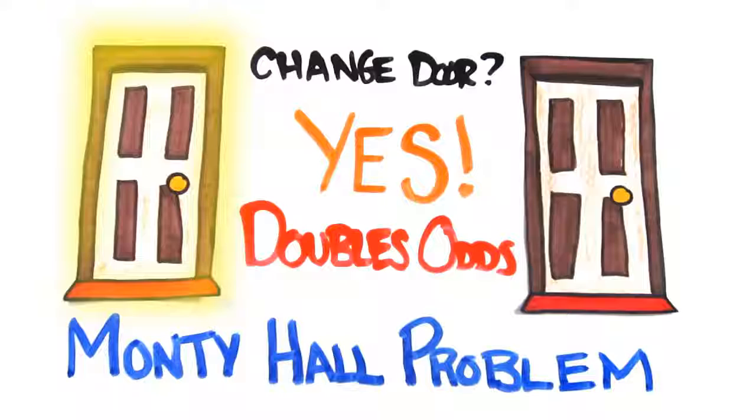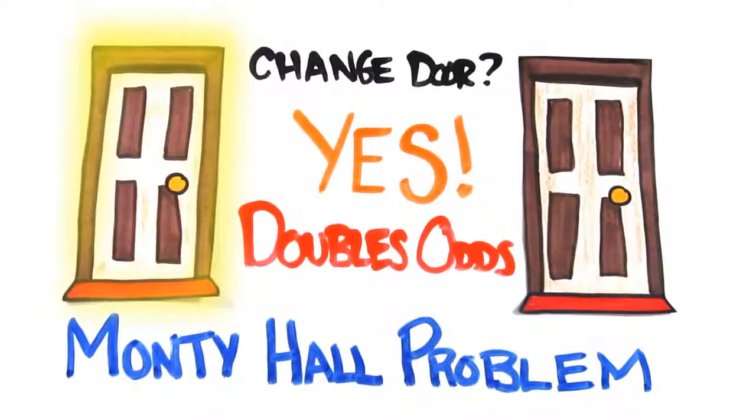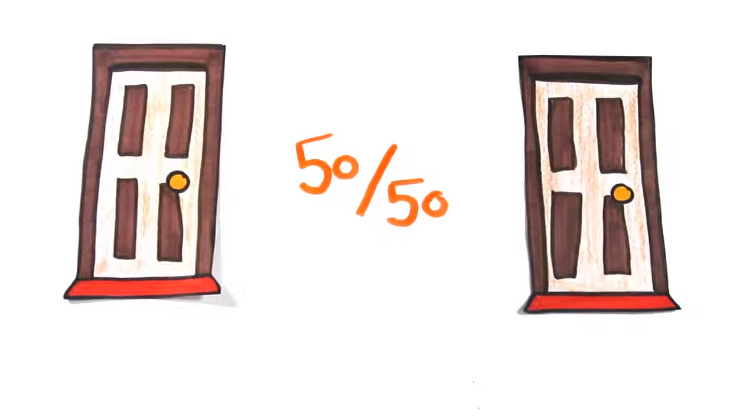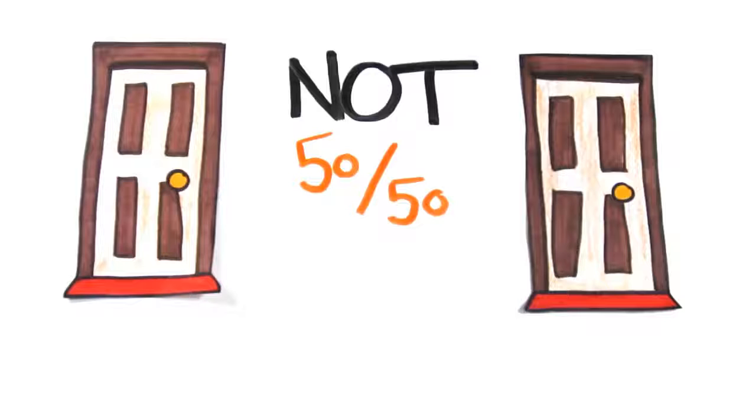But how is that possible? This is the Monty Hall problem. At the start, most people correctly assume that you have a 1 in 3 chance of choosing the correct door, but it would be incorrect to assume that when one door is removed, each door now holds a 50-50 chance of having the car.